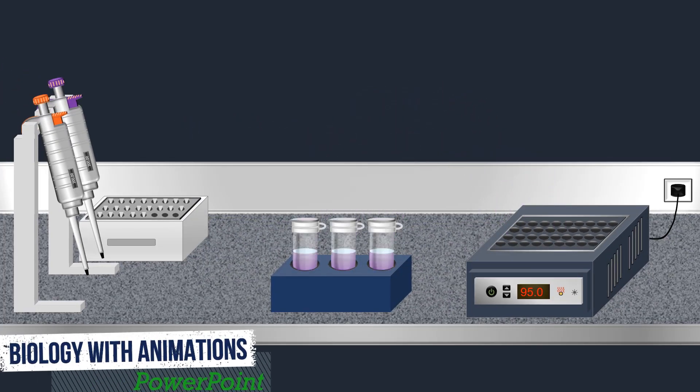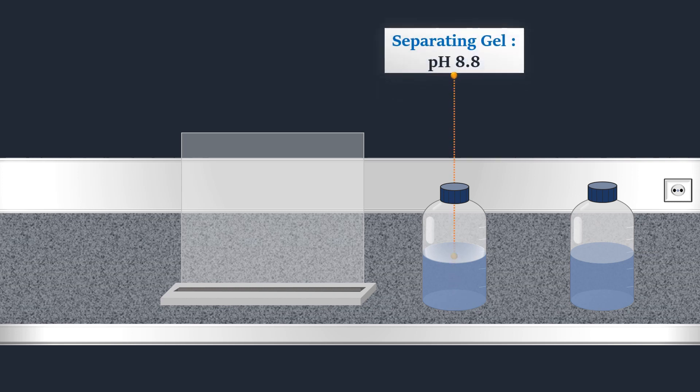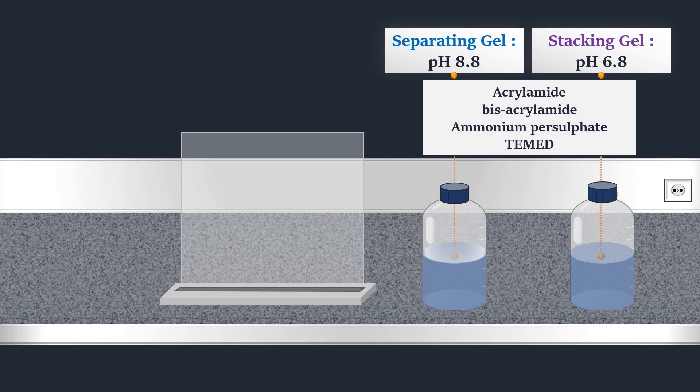For gel preparation, a separating gel solution with pH 8.8 and a stacking gel solution with pH 6.8 are used. Both consist of acrylamide, bisacrylamide, ammonium persulfate, and TEMED.